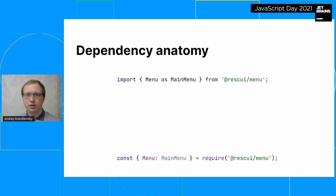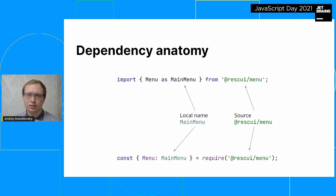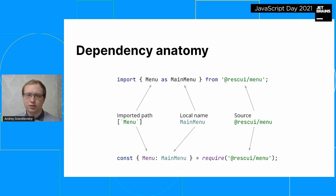But first, let's take a look at what usual ES6 and CommonJS dependencies are in general. They consist of three components. The main component is the source — usually the name of the package or file. Next, the local name of the dependency in the context of the example. And finally, the imported path — what's specifically taken from the module, which can be multilevel, so we represent it as an array.